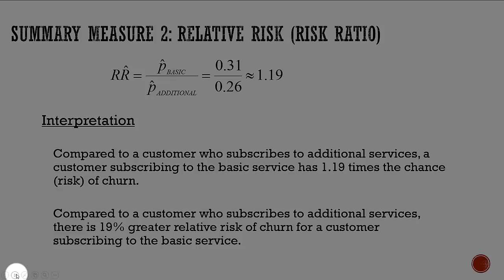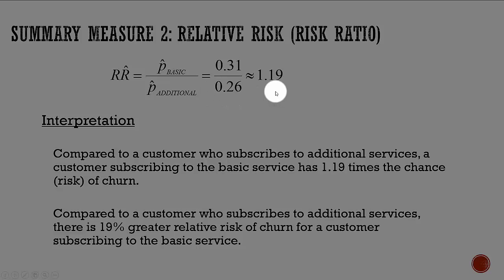You can also get what's called relative risk, or the risk ratio. We take the 0.31 — the proportion who churn for those with basic services — divided by the same thing for those with additional services, and we get 1.19. That means a customer with basic services is 1.19 times as likely to leave as someone who has the additional service.